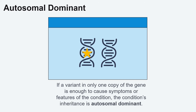Autosomal dominant, also known as dominant, is used to describe conditions caused by changes to genes on the first 22 pairs of chromosomes, or our autosomes. We typically have two copies of these genes. Conditions that are caused by having a pathogenic or likely pathogenic variant — which means that genetic change is associated with health or developmental differences — in one copy of the gene are called autosomal dominant conditions. This means one copy of the gene is working as we would expect and the other copy is not working as typical.